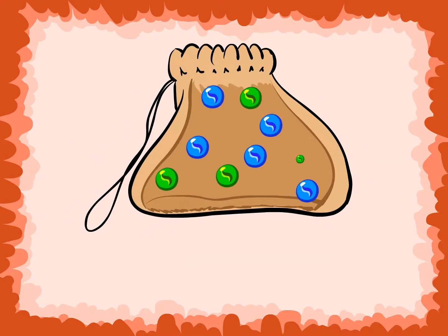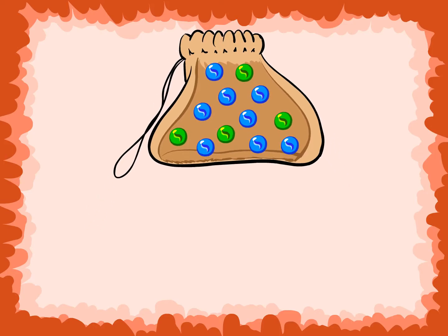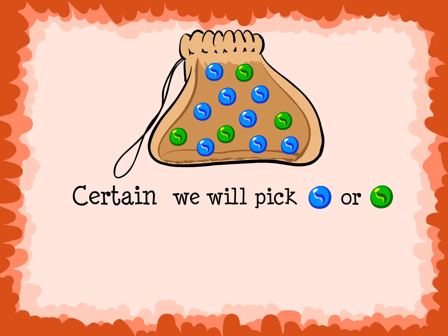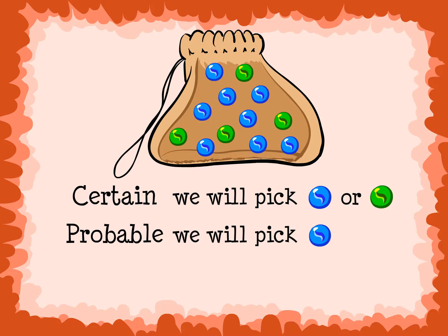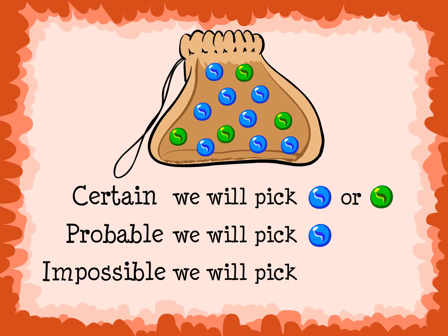There are 8 blue marbles and 4 green marbles in this bag. If we were to predict the outcome of picking one marble out of the bag, we would say it is certain that we will pick a blue or green marble. It is probable that we will pick a blue marble because there are more blue marbles. It is impossible that we will pick a yellow marble because there are no yellow marbles in the bag.